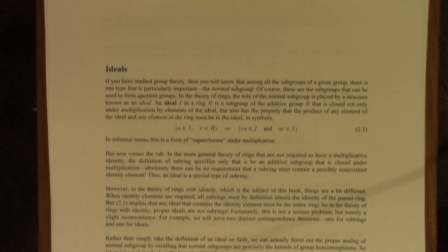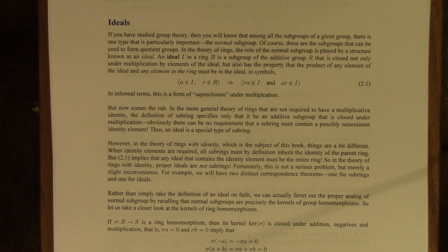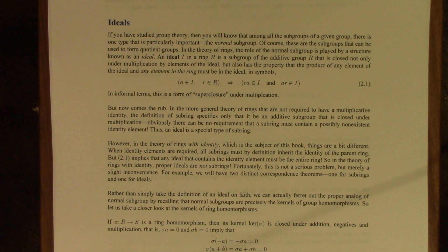If you have studied group theory, then you will know that among all the subgroups of a given group, there's one type that's particularly important: the normal subgroup. These are the subgroups that can be used to form quotient groups. In the theory of rings, the role of the normal subgroup is played by a structure known as an ideal.